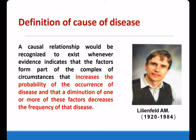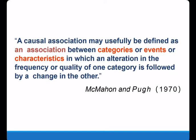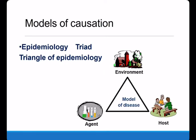Williamfield has defined the cause of disease. In another definition by McMahon, the causal association may usefully be defined as an association between categories of events or characteristics in which an alteration in the frequency or quality of one category is followed by a change in the other. From this we will talk about the different modes of causation.